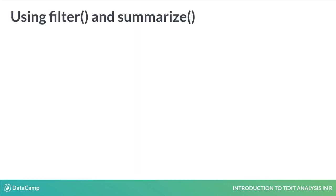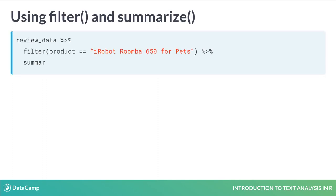Let's compute the average star rating for one of the products. To do this, we first pipe review_data into the filter verb. We use the double equals to tell R we want this to be a comparison and put quotes around the name of the product that we want to keep reviews for. In this case, we only want the rows where the product column is equal to the 650 Roomba model. We then pipe this filtered data frame into the summarize verb and call the mean function on the stars column, assigning it to a new column called stars_mean using a single equals sign.